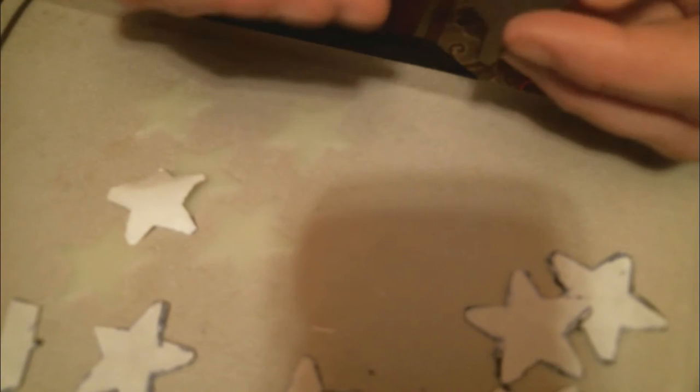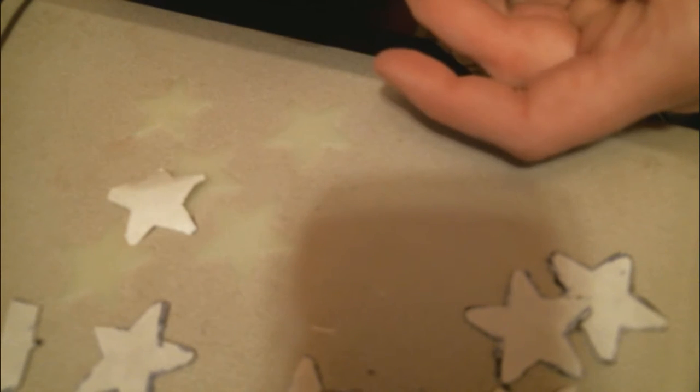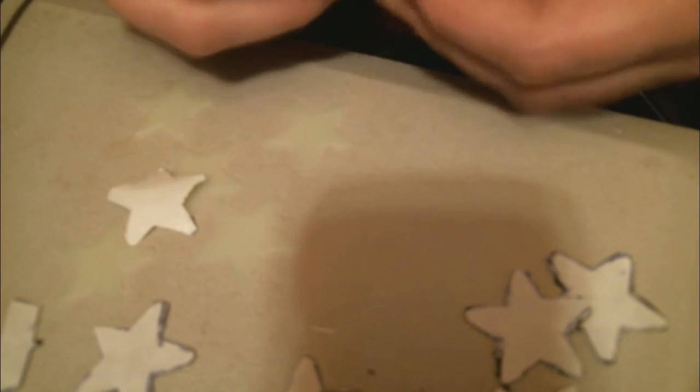What you can't see right now, because I'm a goofball, is me peeling the back off the magnetic sheets. Now these are the pre-sticky magnetic sheets. You're just going to take the star and place it on the magnetic backing, as you guys can see I did here. I'm going to speed up the rest of them.